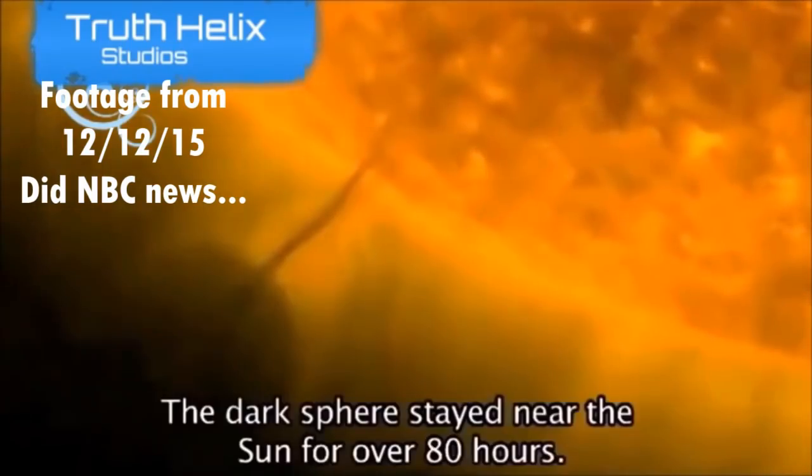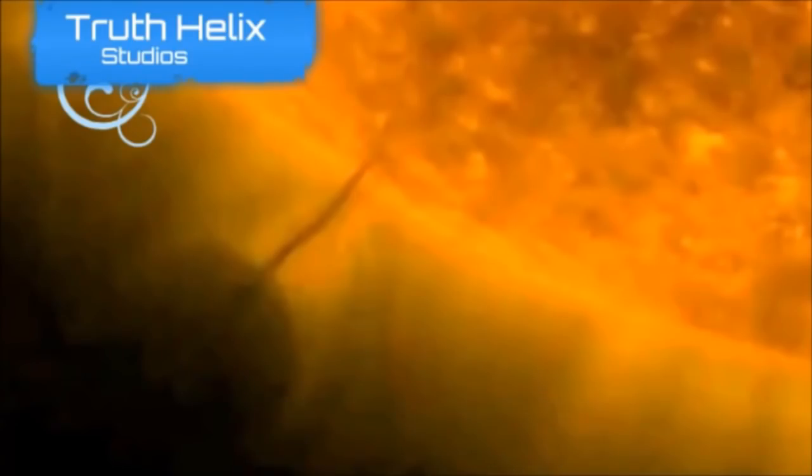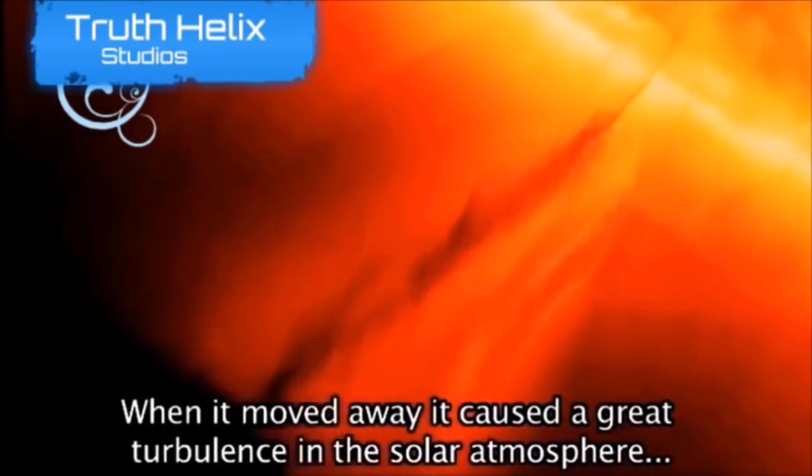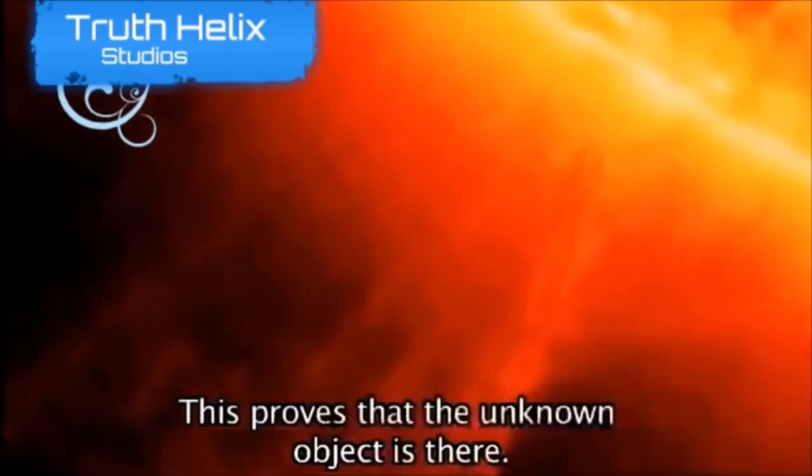The object stayed near the Sun for over 80 hours. When it moved away, it caused a great turbulence in the solar atmosphere that shook for more than five hours. This proves that the unknown object is there.